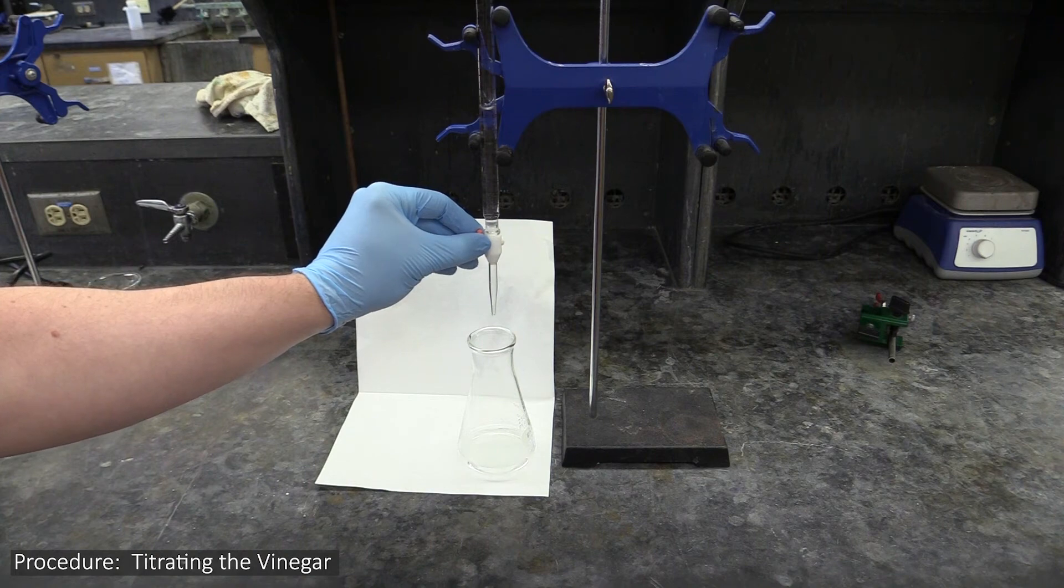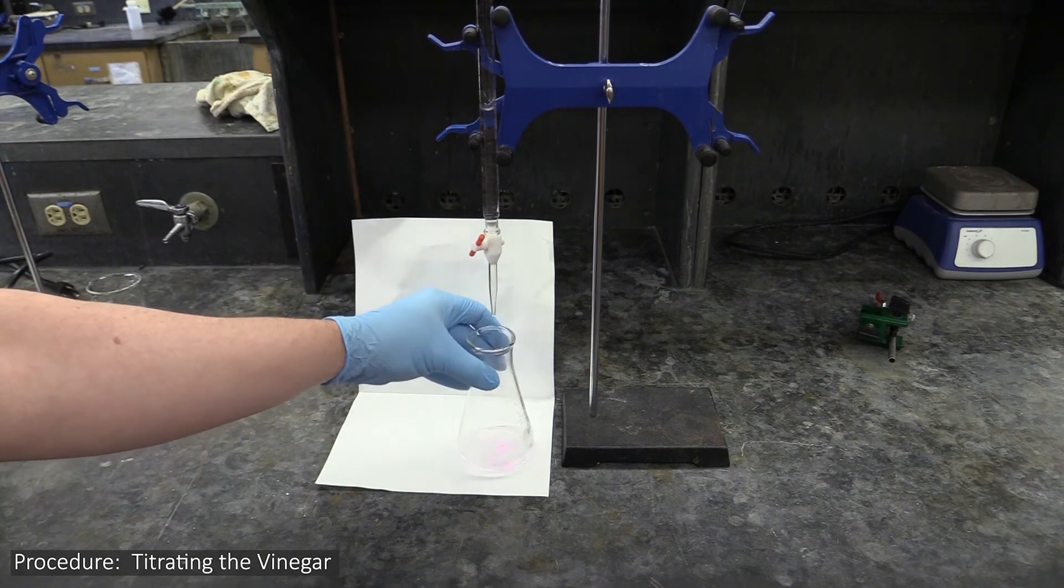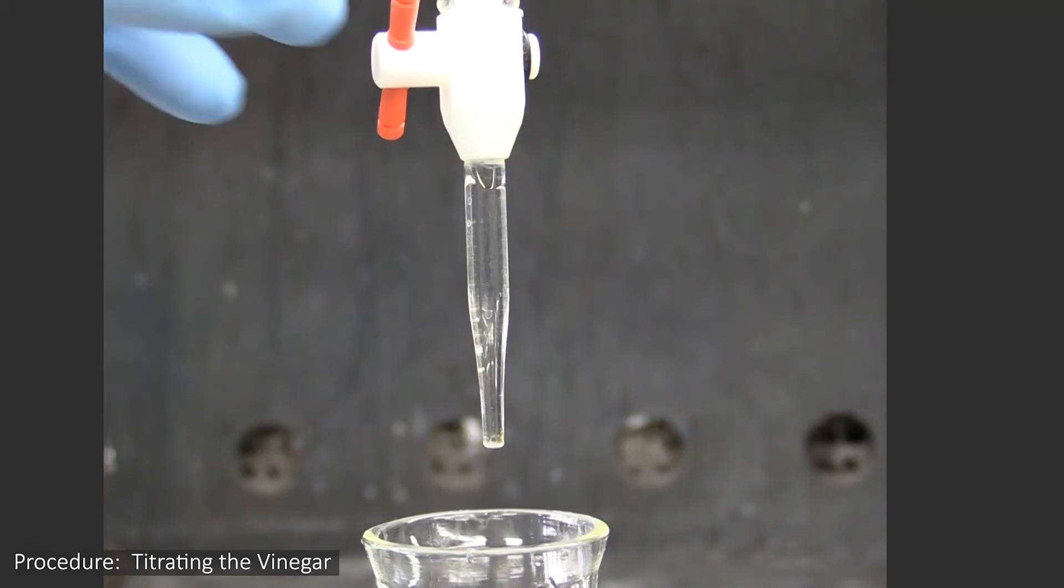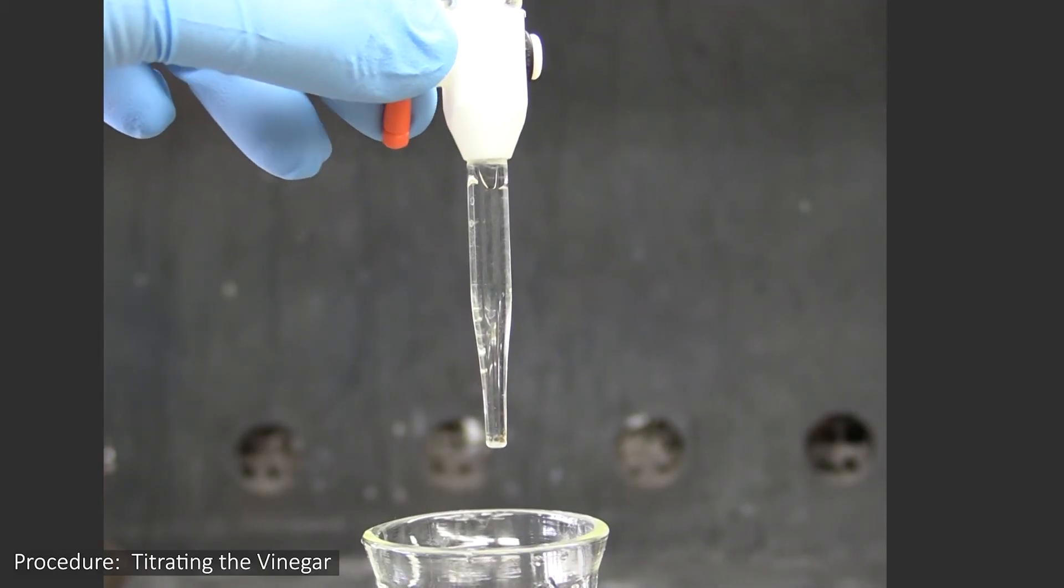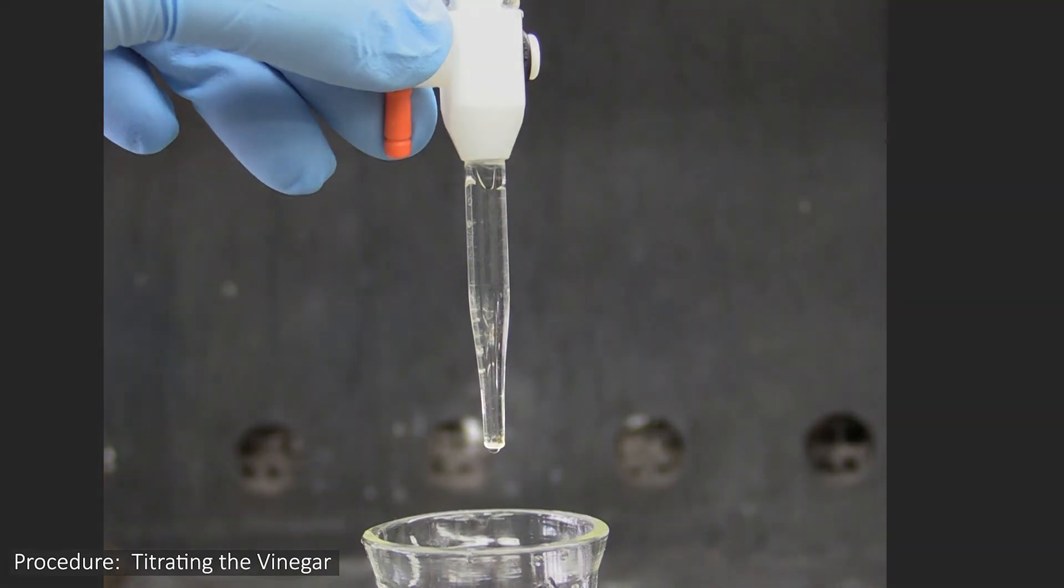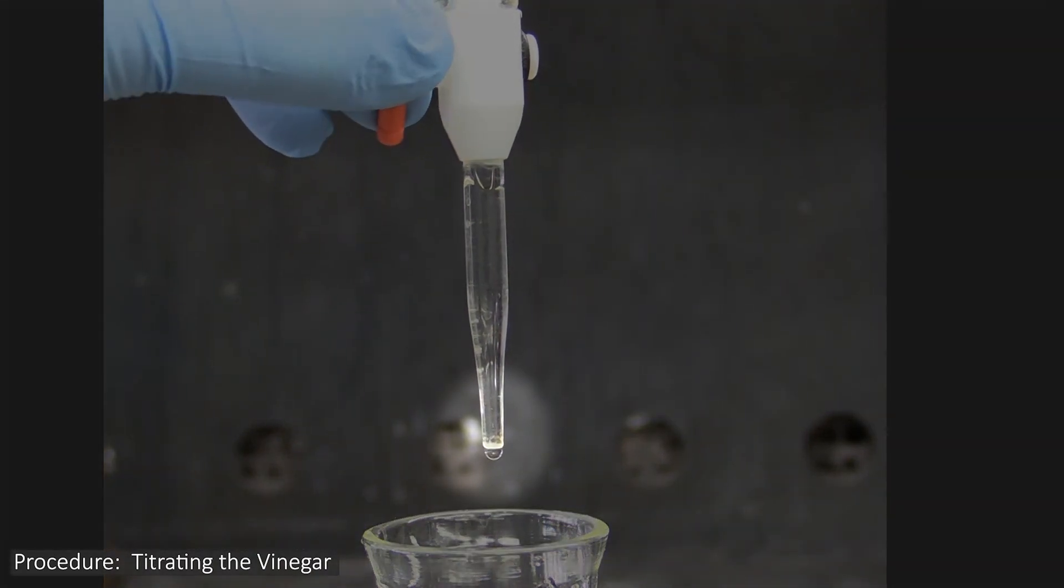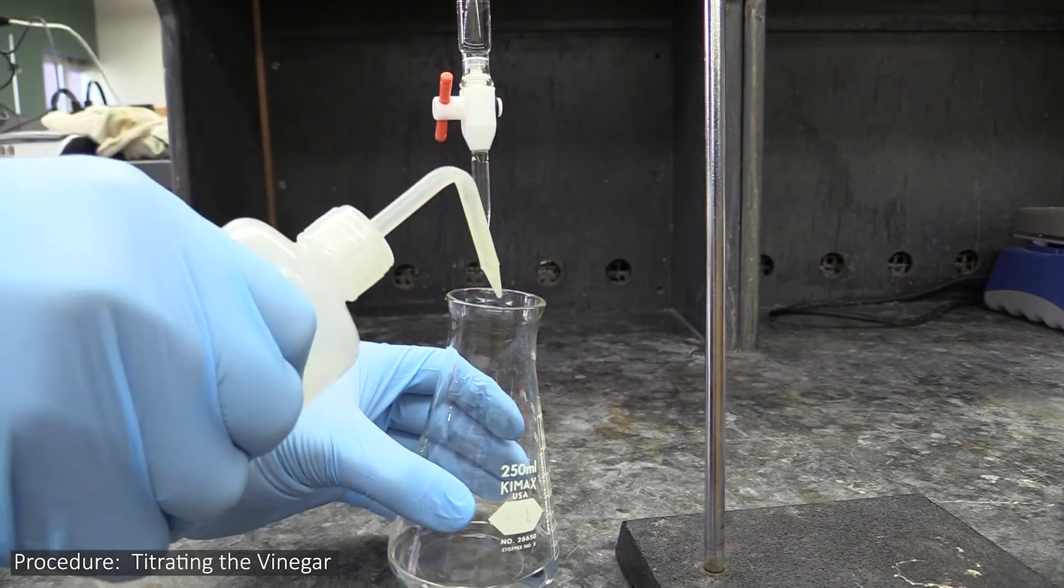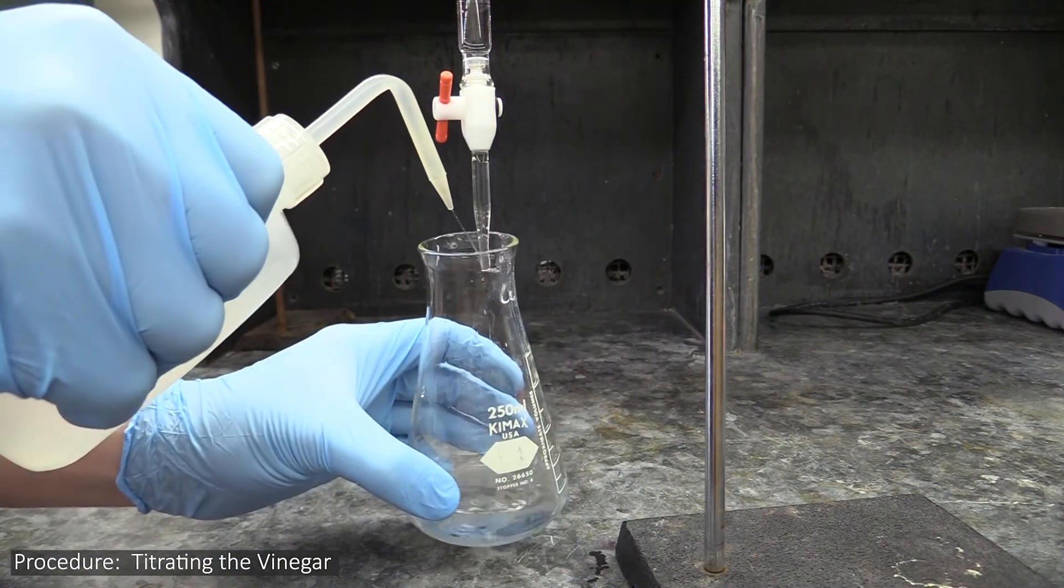Unfortunately, if you are very close to the endpoint, even adding just one full drop can cause it to overshoot. To avoid this, you will probably have to add the last little bit of titrant by slowly opening the valve until a half drop forms on the tip. To get this half drop into your flask, you can either touch it to the flask's inside and wash it down, or use your wash bottle to spray it off.